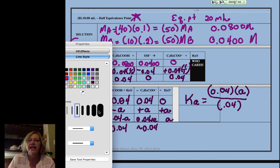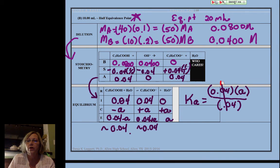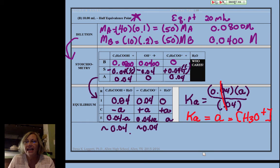Now I want you to notice that I'm going to get a better color here to contrast. I want you to see that that 0.04 crosses out because we're at the half equivalence point, so Ka is equal to a which is equal to my H3O plus.